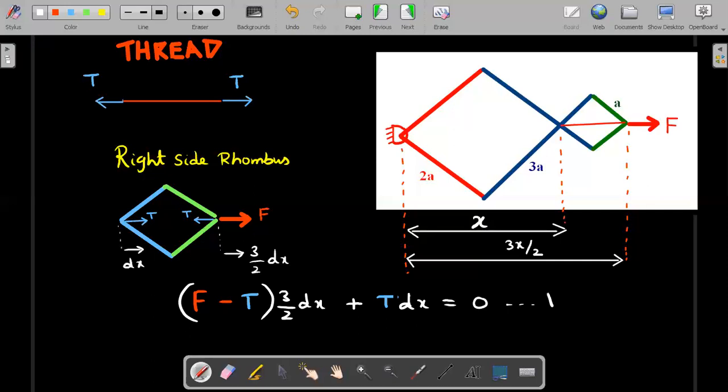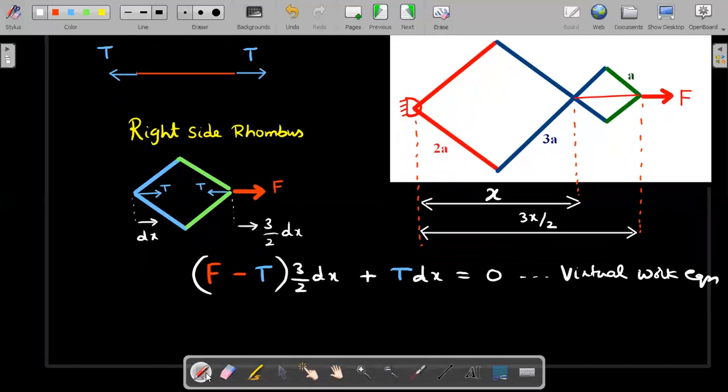This is the virtual work equation. So when you rearrange, and since dX tends to zero but is not equal to zero, mathematicians won't mind if I cancel these dXs. So it's not equal to zero, but it tends to zero.